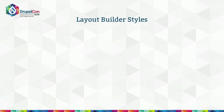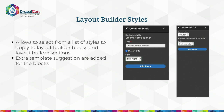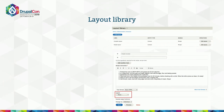Then we have layout builder styles. This is a very small but very handy module. It creates the option to assign CSS classes to sections and to blocks. For example, you can do things like horizontal tabs by assigning a class to a section and making all the blocks within that section behave as tabs — though of course this requires custom development. Something else this module provides is extra template suggestions, if you want to really override the template.